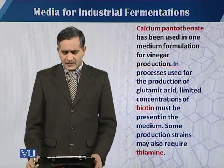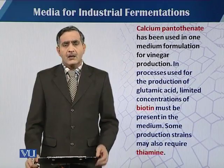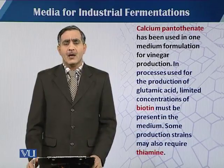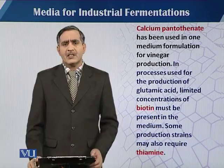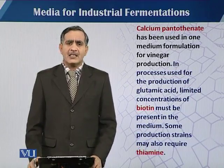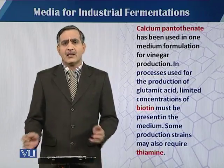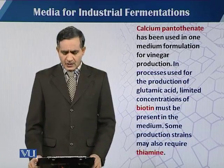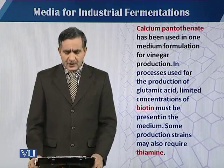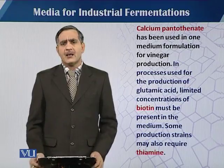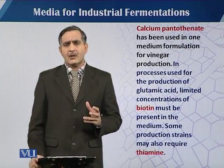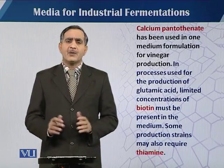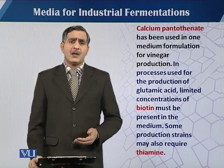Apart from these vitamins, calcium pantothenate is an example used for vinegar production. In the case of glutamic acid fermentation, biotin is mostly added to the fermentation medium. Similarly, when dealing with lysine production, some amino acids and other vitamins must be added to facilitate production. Some production scales may also require thiamine. These growth factors are required for particular organisms and for specific products, because we have to control the metabolic pathways, especially in the case of secondary metabolites.